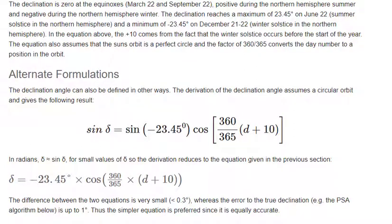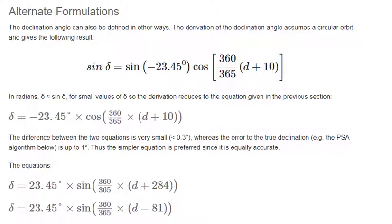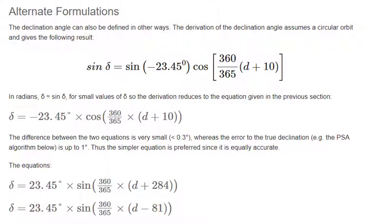In the equation above, the plus 10 comes from the fact that the winter solstice occurs before the start of the year. The equation also assumes that the sun's orbit is a perfect circle, and the factor of 360/365 converts the day number to a position in the orbit.